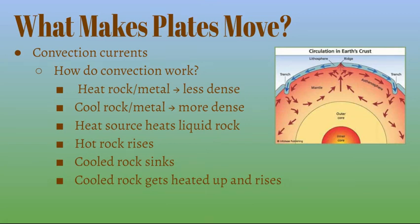What makes plates move? Convection currents power the rock cycle and also move the plates. Like a convection oven or a lava lamp, the core heats the liquid mantle closest to it, making it less dense. The heated rock rises up while cooled rock sinks down, then gets reheated by the core. This cycle repeats, forming convection cells whose circular movement underneath the plates causes them to move apart, against, or towards each other.